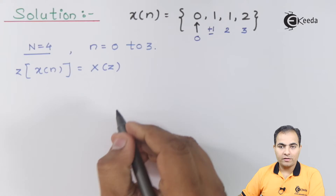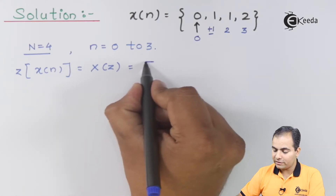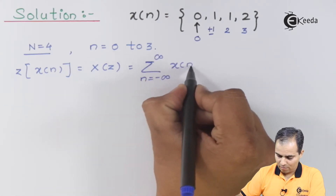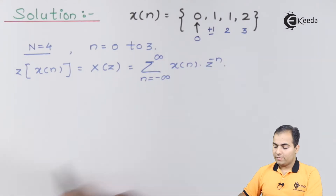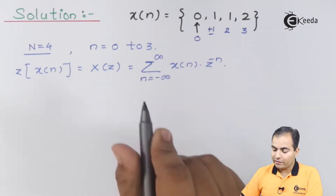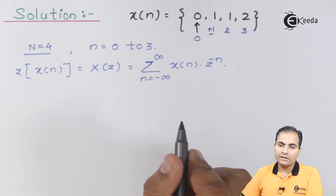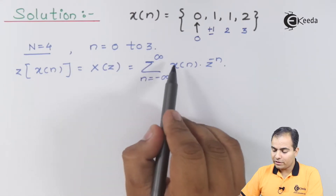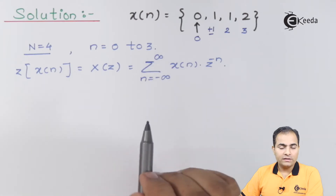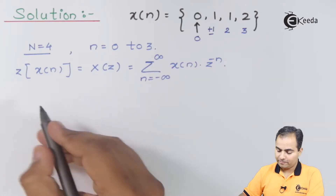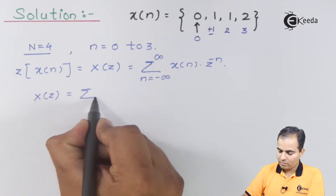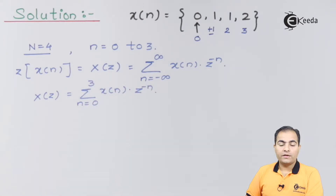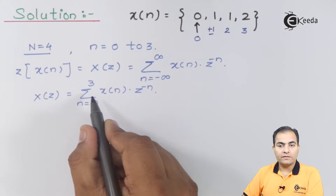The Z-transform X(n) is represented by X(z), and the definition is: summation with n varying from minus infinity to infinity of x(n) times z to the power minus n. Since our n value varies from zero to three, we replace the summation limits accordingly and break this summation.